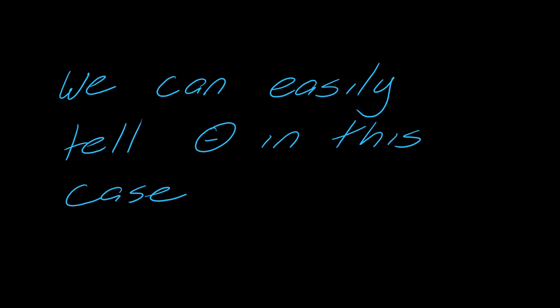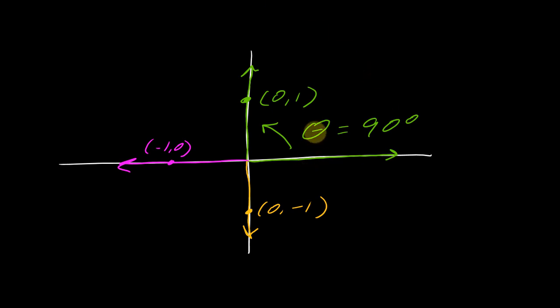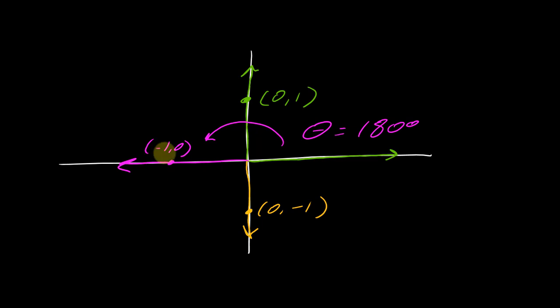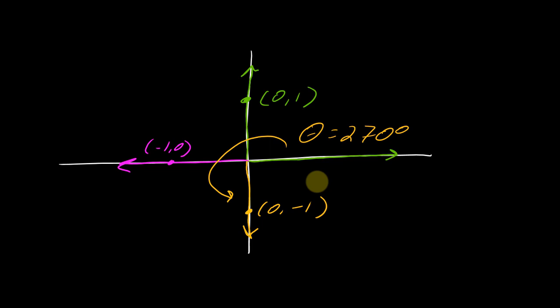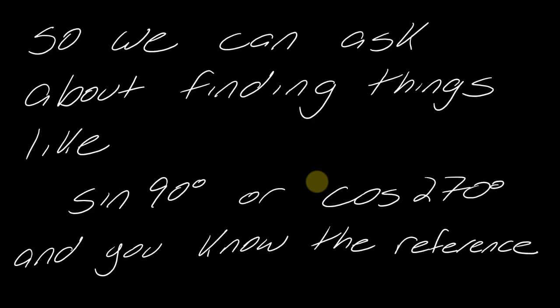You can easily tell what theta is in all these cases — I know what these measures are. So if I were told to find the value of some trig function of 90 degrees, I can easily draw that situation. Or 180 degrees, I know what that picture looks like. So even with quadrantal angles, we can visualize the situation easily, and if asked to find sine of 90 degrees or cosine of 270 degrees, you know that reference picture and can find anything from it.